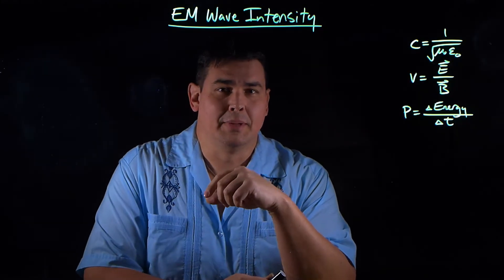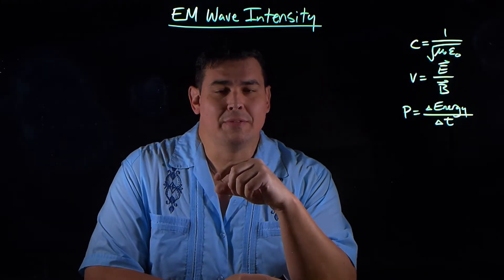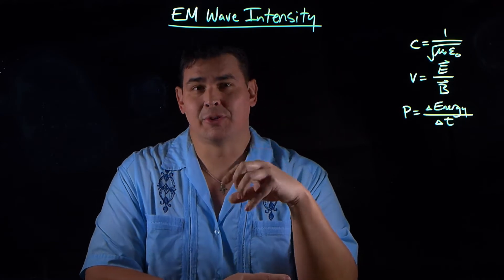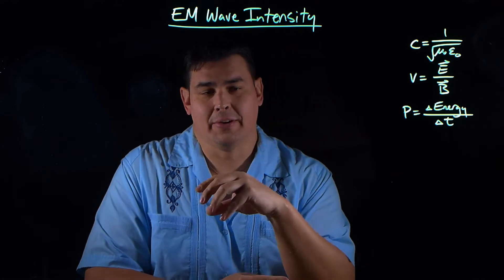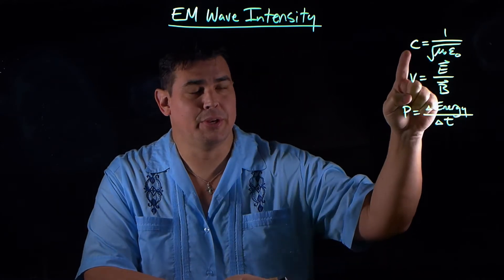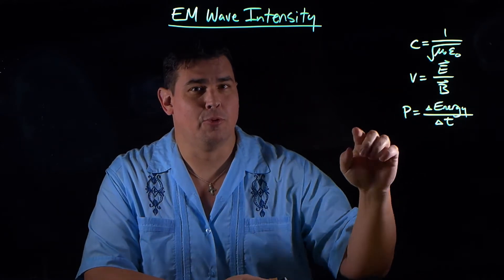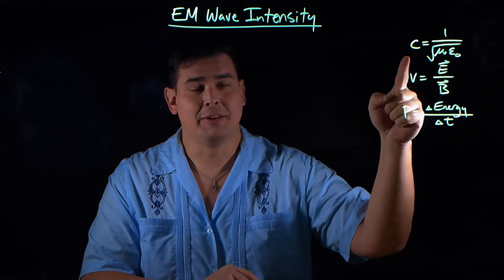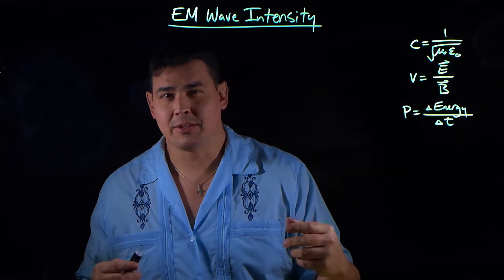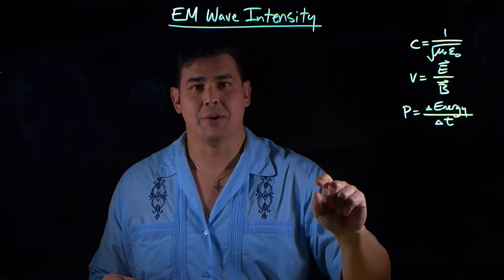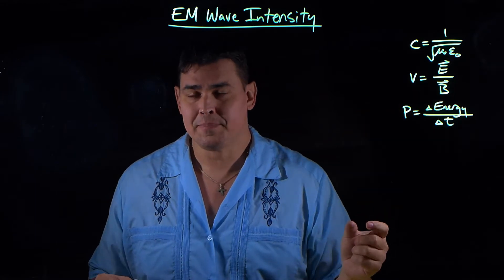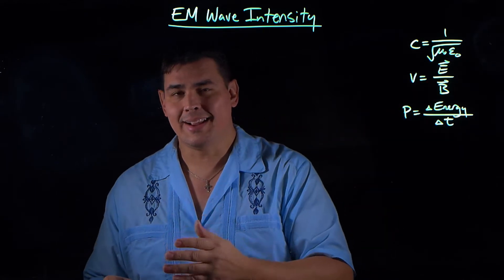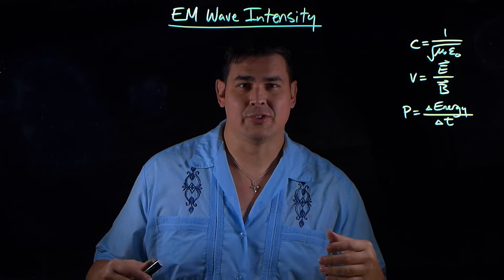We're going to look at electromagnetic waves and the intensity of the energy that they carry. First, a little bit of review. We know from Maxwell's equations that the speed of light is 1 over the square root of μ₀ε₀, where μ₀ and ε₀ are the magnetic constant and the electric constant.